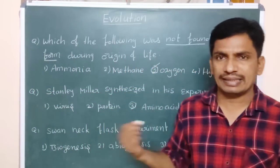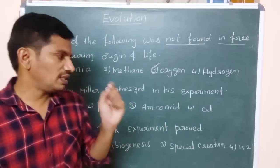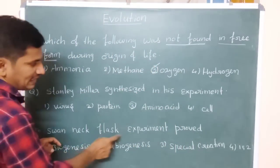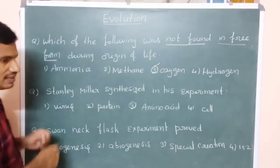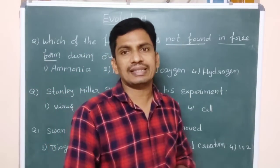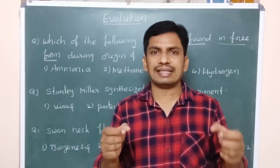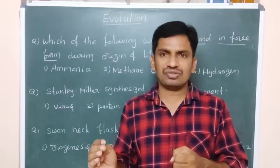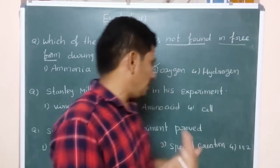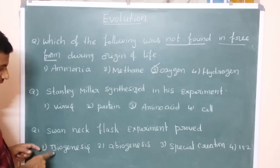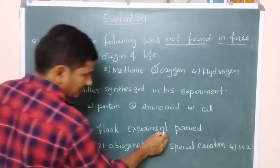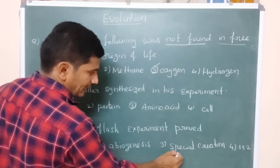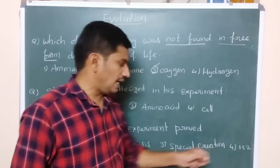Next one, swan neck flask experiment proved that. Pasteur was conducted this experiment. Swan neck flasks, he has taken that two flasks in that one should be open and released, other should be closed. Then how life was originated? For that, this flask experiment proved that what? It proved biogenesis or abiogenesis and special creation, and fourth one is the one and two.